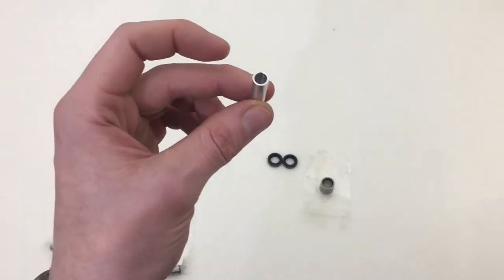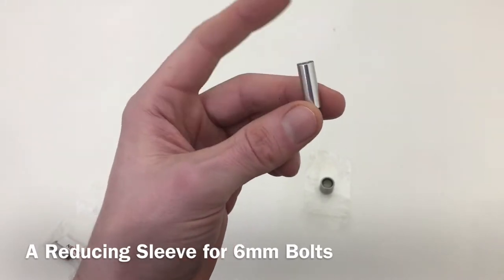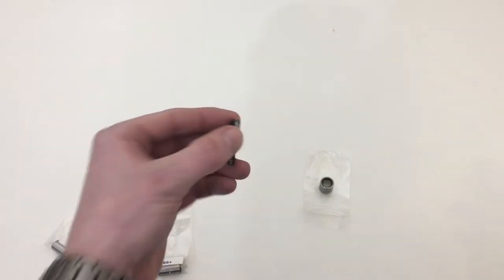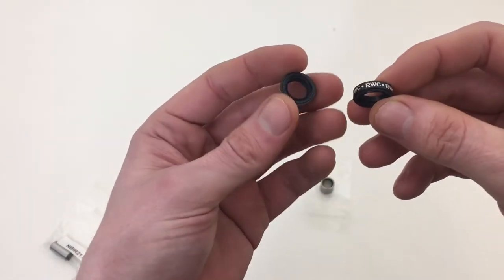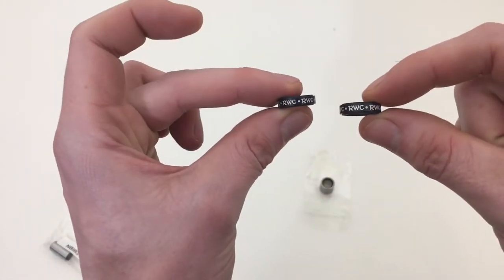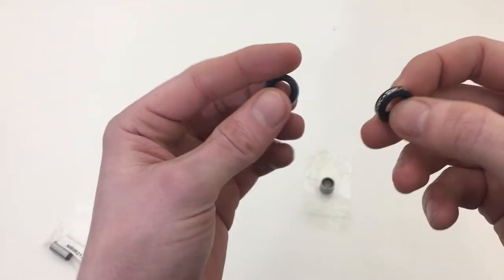I'm not too sure what this part is, probably something to aid installing it. We'll find out. And then you've got the two spacers. You can get these in different colors. I've just gone for black on mine.